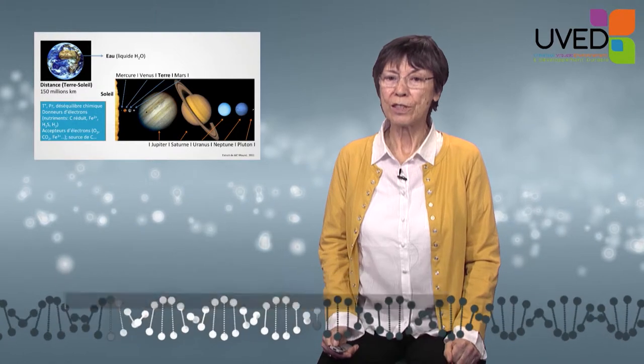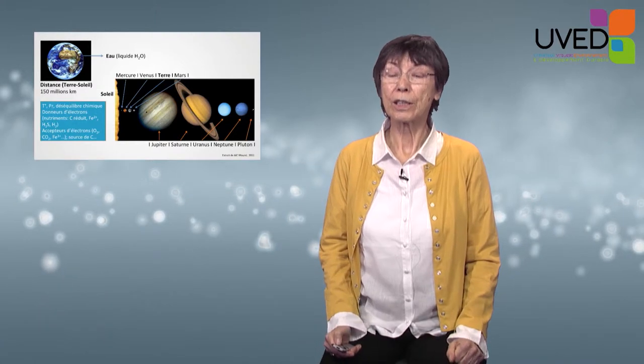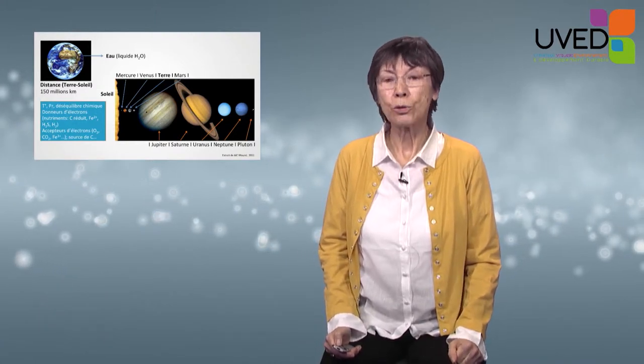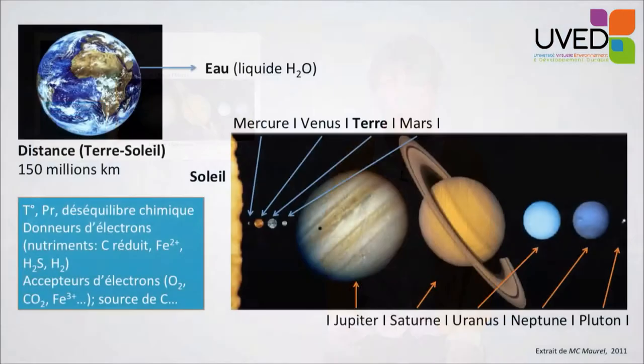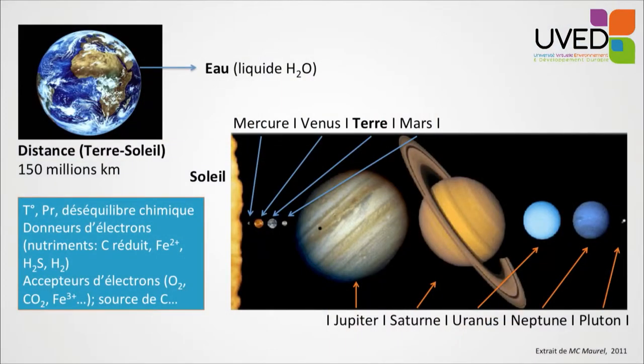Where does life come from? In order to try and answer the question, we need to redefine the context. The context is the Earth. The Earth is the only planet in the solar system on which life was found. And the Earth is also the only planet in the solar system where liquid water can be found. Water and life are closely intertwined.